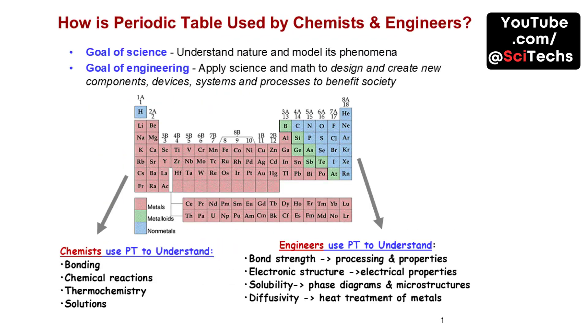The periodic table is a crucial tool for both scientists and engineers. Scientists use it to understand bonding, chemical reactions, and thermochemistry, while engineers apply this knowledge to design new materials and improve existing ones.